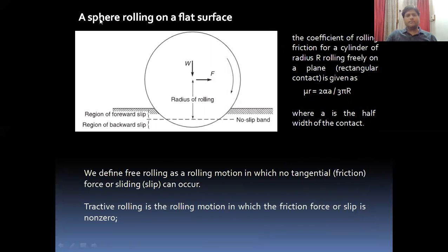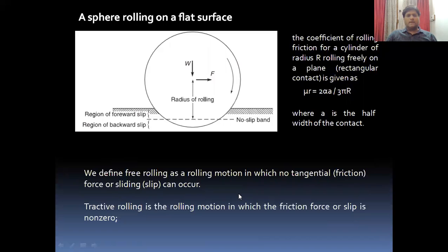Taking the example of a sphere rolling on a flat surface, there are three different regions of slip: the forward region, the backward region, and the no-slip region. The radius of rolling is shown, and the weight W acts at the center of the sphere. F is the frictional force acting against the rotation of the sphere. To calculate the coefficient of rolling friction for this condition, you can use the corresponding equation. Two motions take place in the case of rolling friction.